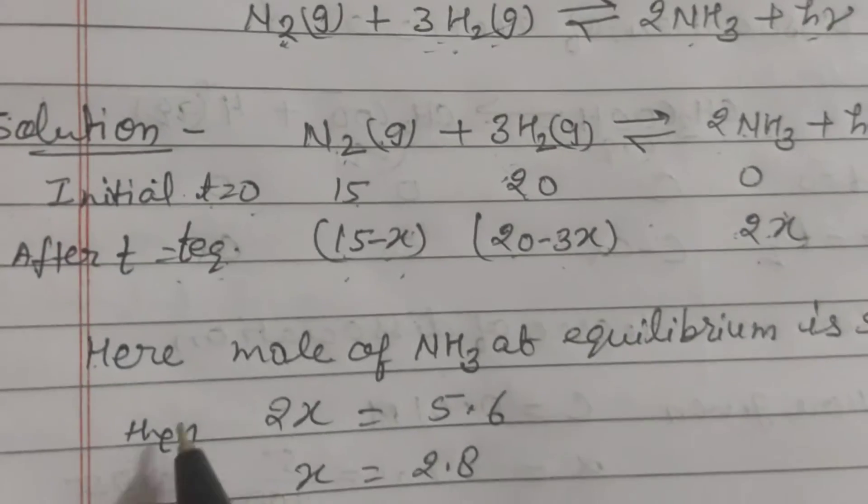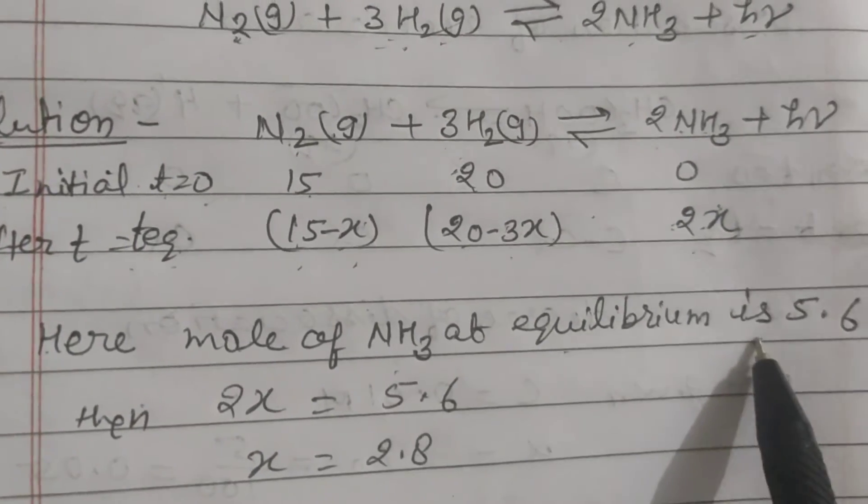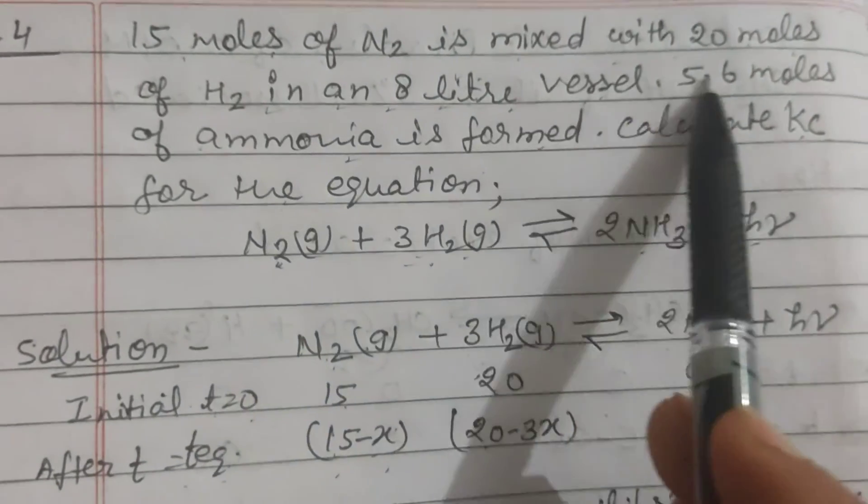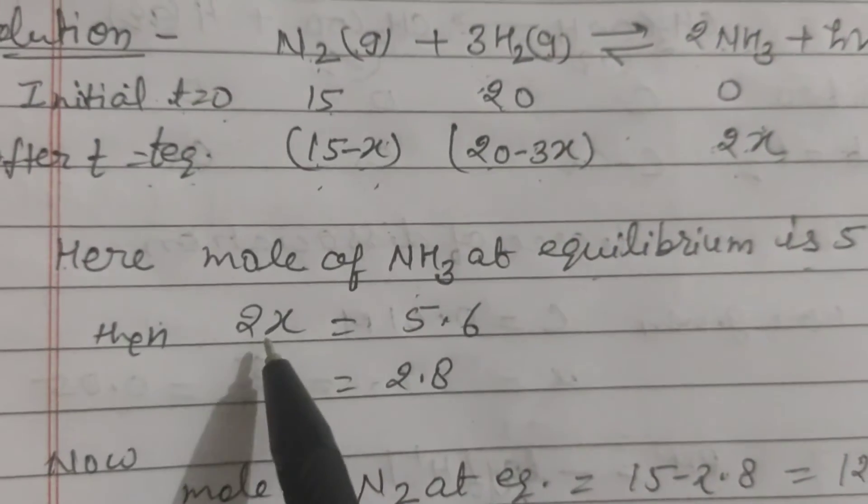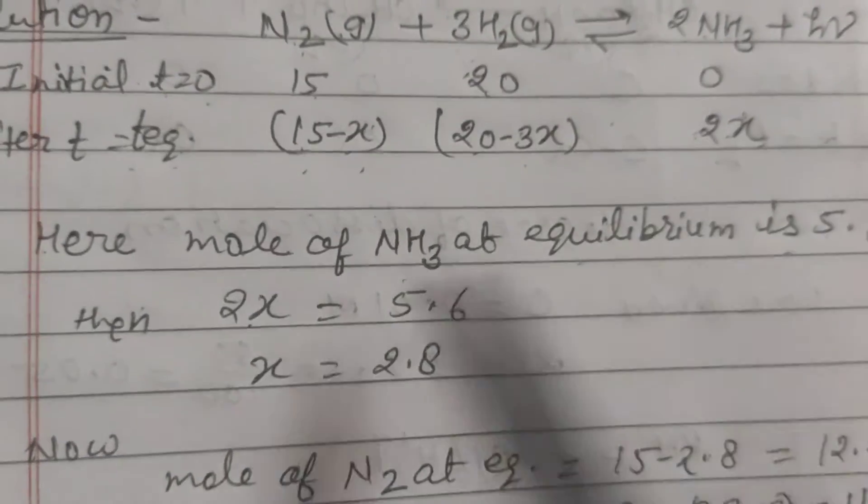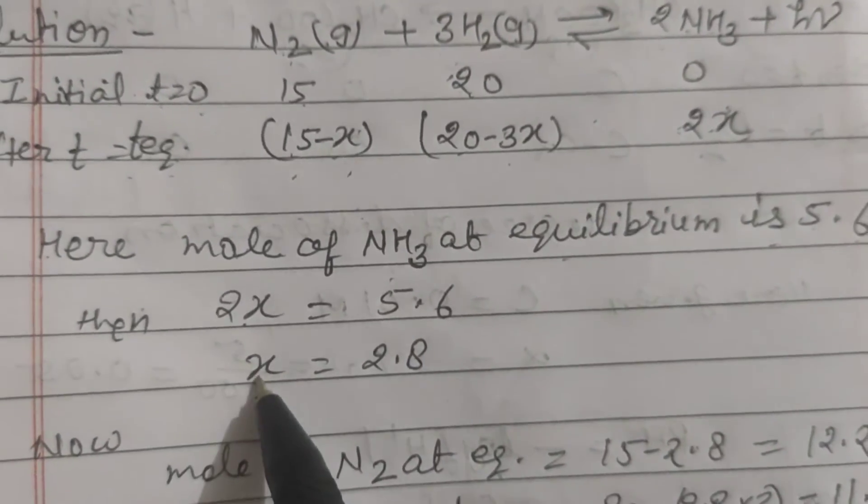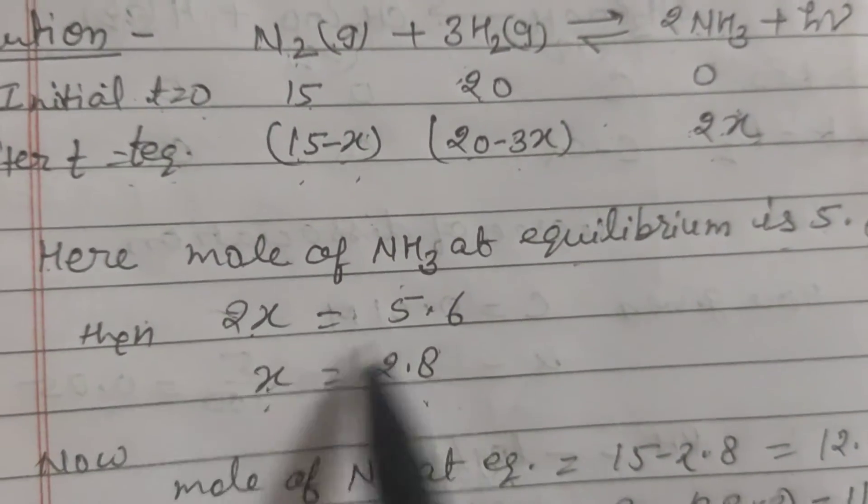Now we have to get here moles of NH3 at equilibrium is 5.6 as we have seen in this problem. This is moles of ammonia. Now if we find 2X equals 5.6, then value of X is 2.8.